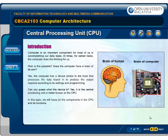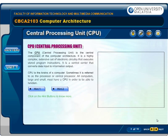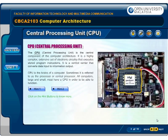Can you guess what this device is? Yes, it is the central processing unit, or better known as the CPU. In this topic, we will focus on the components in the CPU and its functions. The CPU or central processing unit is the central component of the computer architecture. It is a control center that converts data input to information output. CPU is the brains of a computer, sometimes referred to as the processor or central processor. All computers, large and small, must have a CPU in order to function.